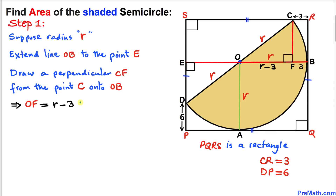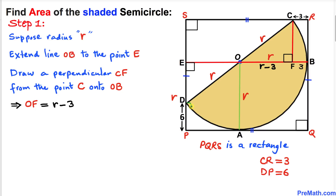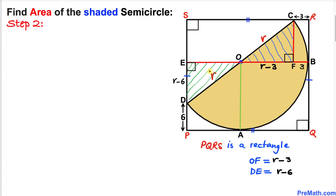Therefore we conclude that this length OF is r minus 3. One more thing: the whole OA distance is radius r, therefore this distance PE is going to be radius r as well. Now we know that this distance PD is 6 units, therefore this distance DE is going to be r minus 6. So this length DE turns out to be r minus 6.